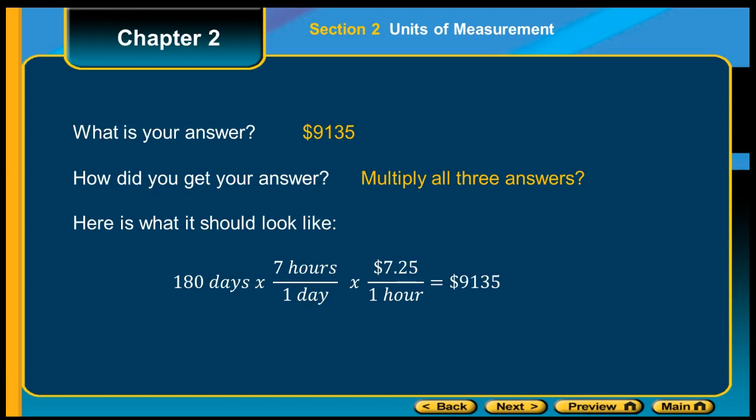What we're doing here is taking our 180 days, which is our starting value, and we know that each day has seven hours. So days are here and day is here, and you now converted to seven hours. Hours is here, and now hours would go on the bottom so that we can cancel, and we'll put our dollars on the top.